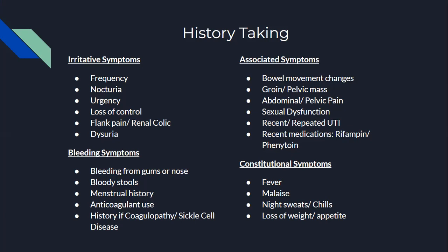Ask about constitutional symptoms — this can help narrow down your diagnosis to possible cancer, illness, or sepsis. Ask about fever and malaise. Has the patient been experiencing night sweats or chills? Have they noticed any unintentional weight loss or loss of appetite?